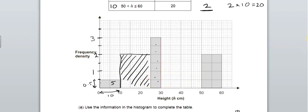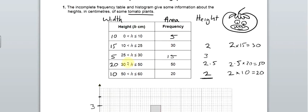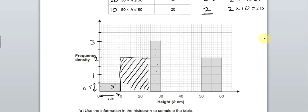The 30 to 50 bar has got a height of 2.5. So 2.5. There we go. And that's that. And there we go. We've completed the histogram.